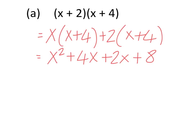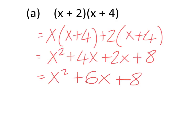Now we look for like terms. We have an x squared term with nothing like it. We have plus 4x and plus 2x beside it, and plus 8 on the end. Gathering the two middle terms together gives us x squared plus 6x plus 8. There are no further like terms, so it's fully simplified — that's the answer.